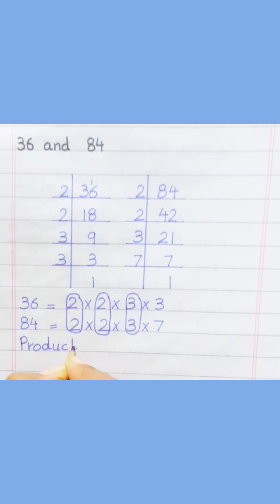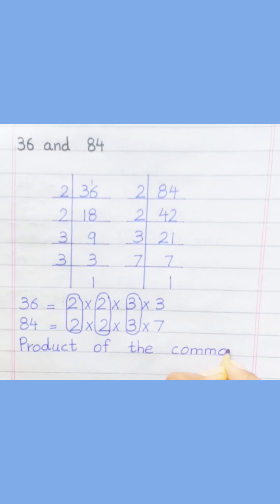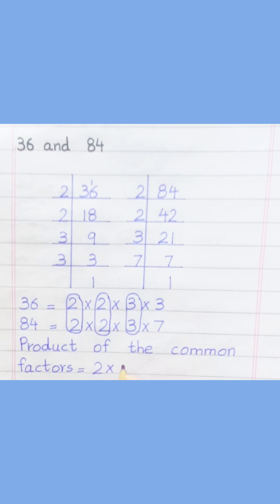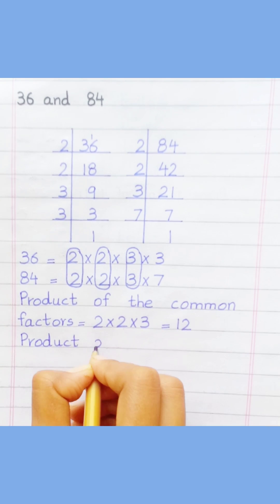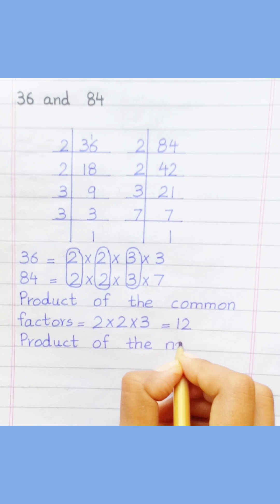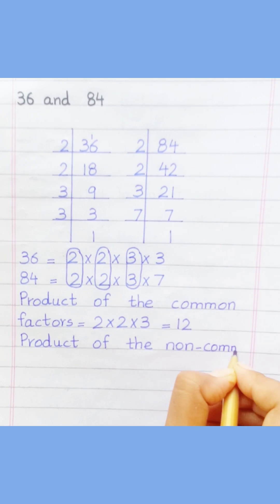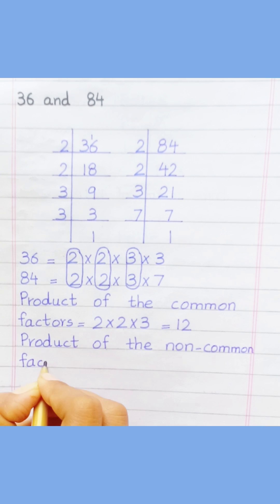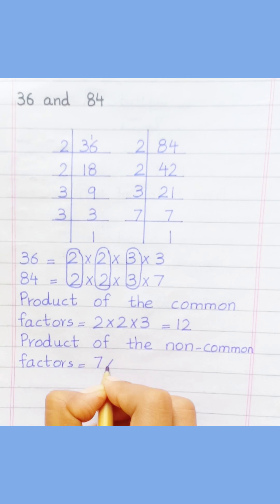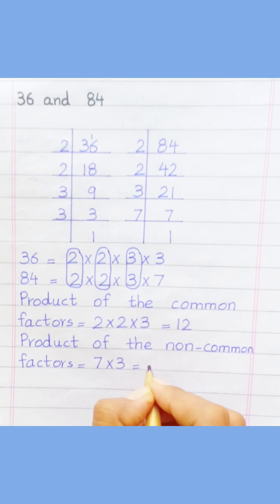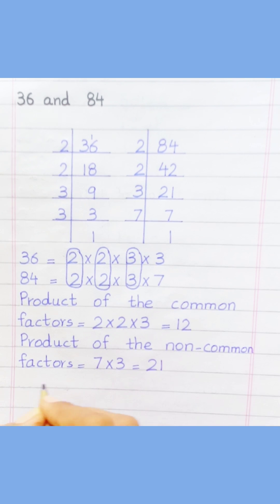Product of the common factors equals two multiply two multiply three, equal to twelve. Product of the non-common factors equals three multiply seven, equal to twenty-one.